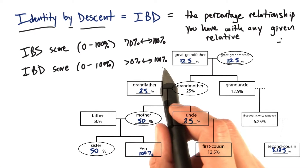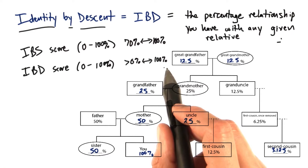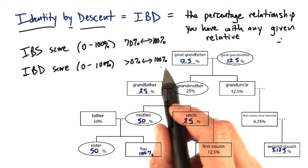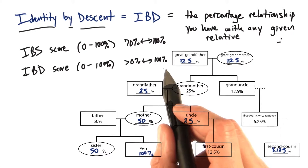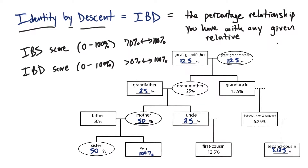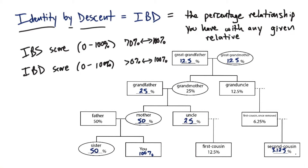And we can be all the way up to 100%, obviously, if you compare it to your own genome or if you have an identical twin. So in a way, what we're looking for here is to see where your closest genetic relatives are to your furthest genetic relatives.